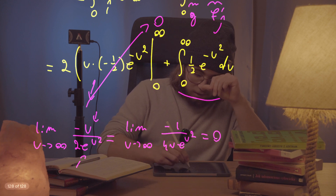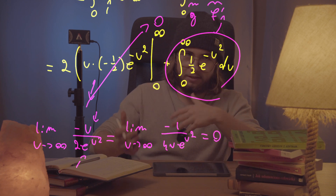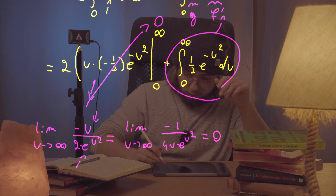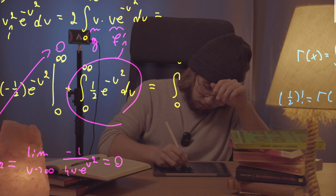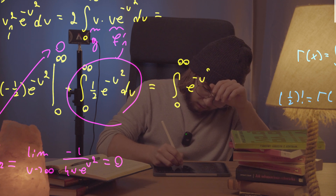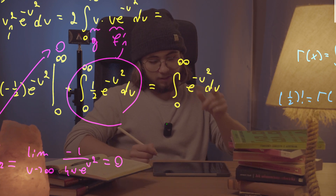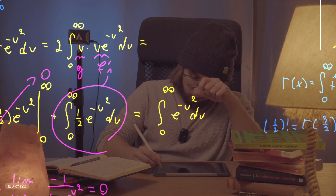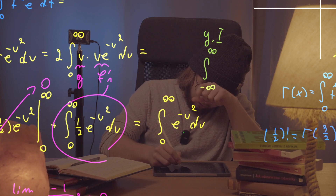Now the fun part: we have one half times the integral from zero to infinity of e to the negative u squared. Multiplying through, we get the full integral from zero to infinity of e to the negative u squared. This is actually the famous Gaussian integral — or rather, half of it, since the original Gaussian integral runs from negative infinity to infinity of e to the negative x squared dx.